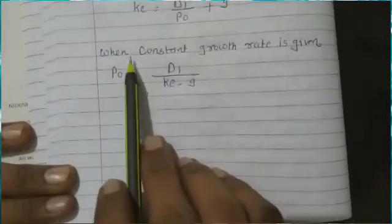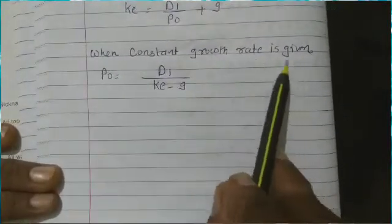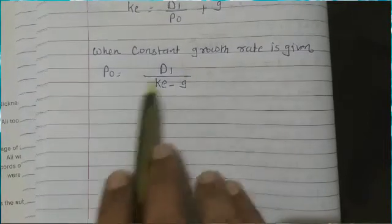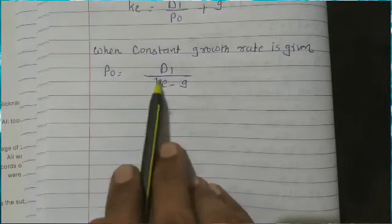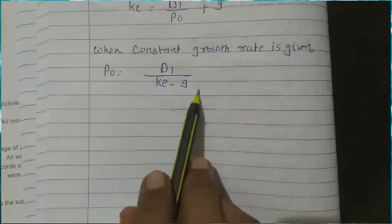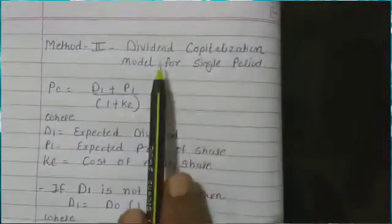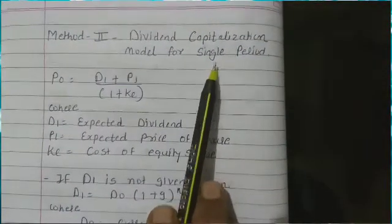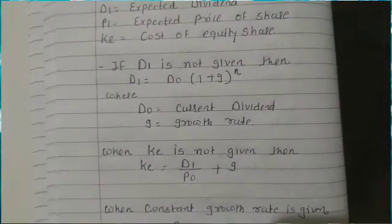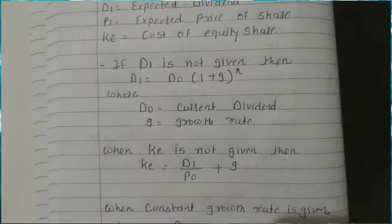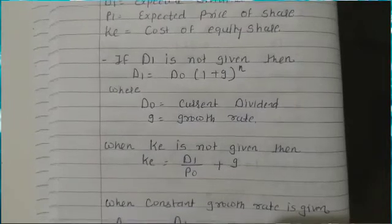And lastly, when a constant growth rate is given, we use the formula: price of the share P0 = D1 / (K − G). So these are the formulas to use in the dividend capitalization model for the single period. We need to understand which formula to apply based on the information given in each case of valuation of equity shares.